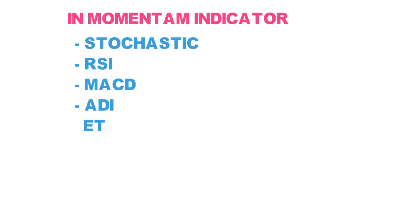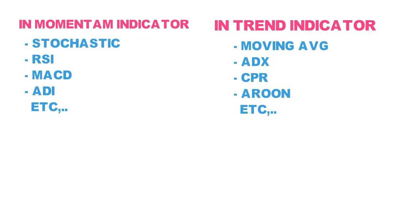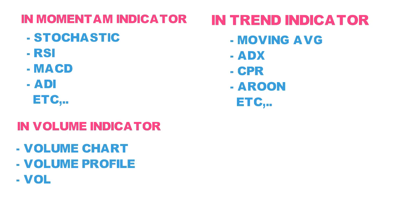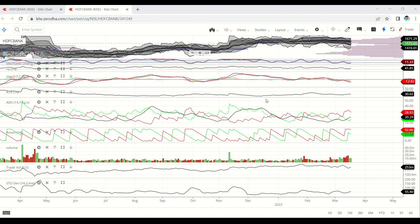All oscillators fall under these five indicator categories. Under momentum: Stochastic, RSI, MACD, ADI and more. Under trend: Moving Average, ADX, CPR, Aroon and more. Under volume: Volume chart, Volume index and more. 90% of traders make the same mistake — applying 10 to 20 oscillators like Stochastic, RSI, MACD, Moving Average all at once. It looks very complicated and you can't understand anything from it.